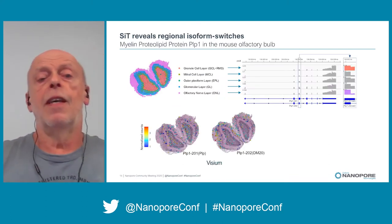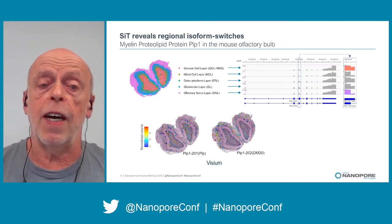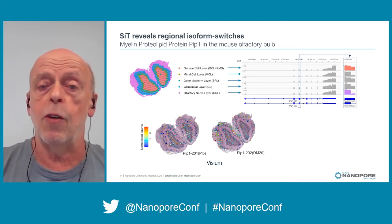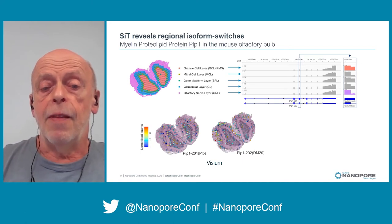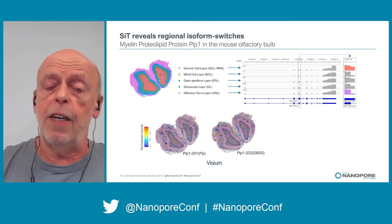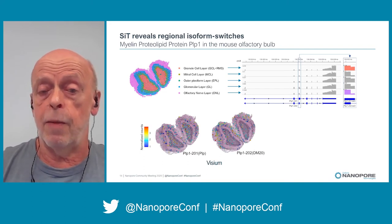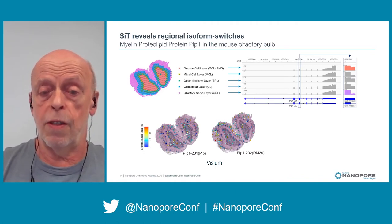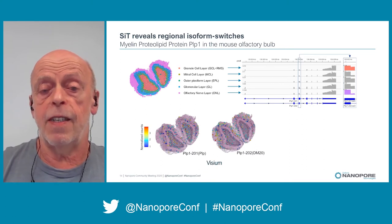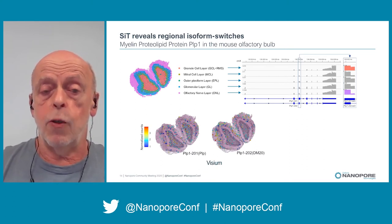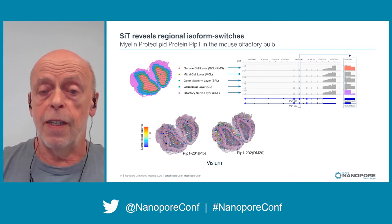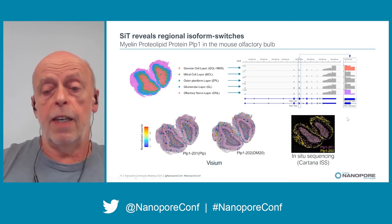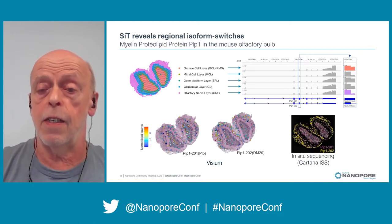By doing this, we obtain spatially resolved isoform expression information. Here is one example: PLP1 in the mouse olfactory bulb. One of the two isoforms is mainly expressed in the inner layers of the olfactory bulb, the other mainly in the outer layers. The Visium system has a rather low resolution — spots are 50 micrometers in diameter — but it is a good system to explore a tissue for changes. You can then refine those using a higher resolution technique; we used in-situ sequencing, which nicely confirms this isoform switch.